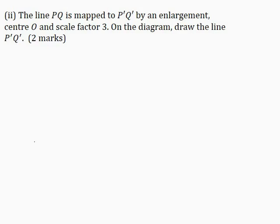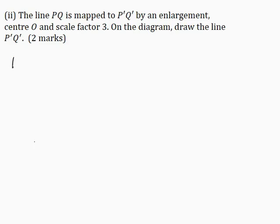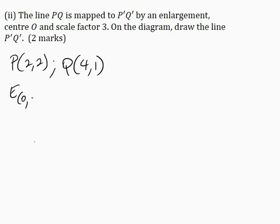Part 2: The line PQ is mapped to P'Q' by an enlargement, center O and scale factor 3. On the diagram, draw the line P'Q' for 2 marks. Now from our diagram here, we can see that P is located at (2, 2) and Q is located at (4, 1). For an enlargement with center O and scale factor K, for an object XY, it has an image of (KX, KY).